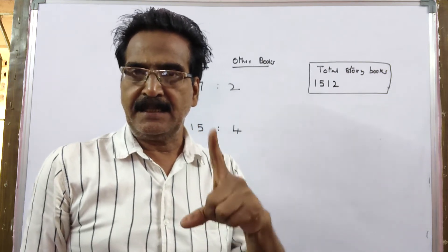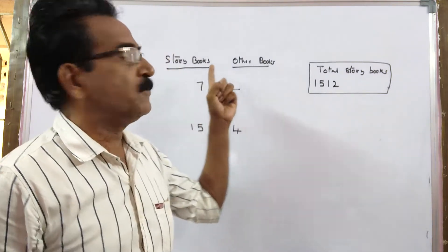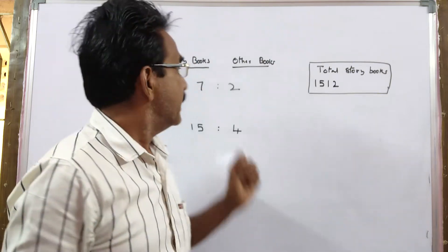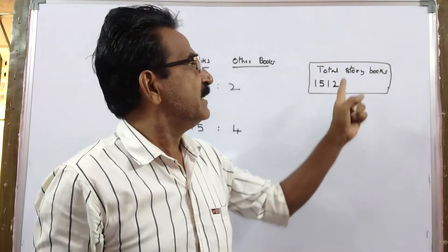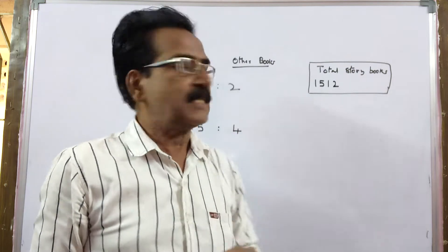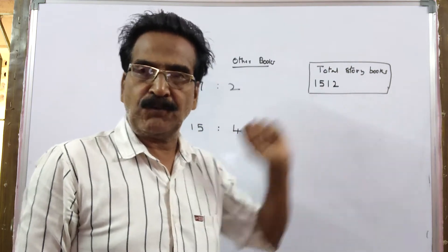See friends, in a library, the ratio of storybooks and other books is 7 is to 2. And it is given that the total number of storybooks is 1512.